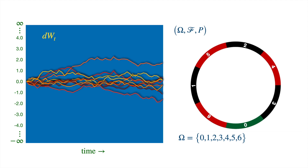For example, if the game is about betting on the red pockets, then the sigma algebra could be just the four subsets: the empty set which captures the impossible events, the whole set event itself, and the red and non-red events. And one can then assign probabilities to these events.